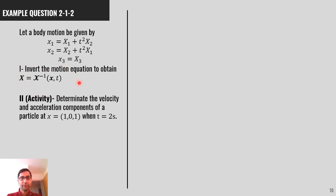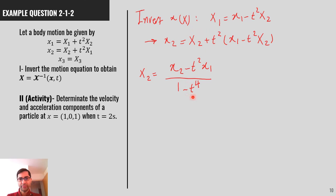Okay, let's work out the first part of this example. We invert x as a function of capital X. So, from the top equation, I find capital X1 equal to x1 minus t squared x2. And substituting that into the second equation, I get capital X2 equal to x2 minus t squared multiplied by x1 minus t squared capital X2.